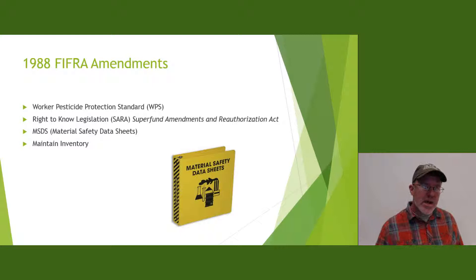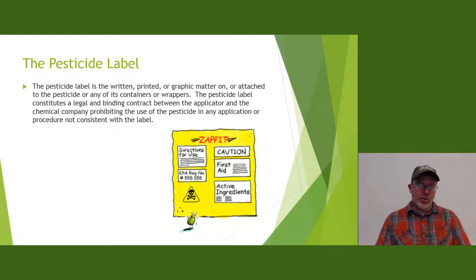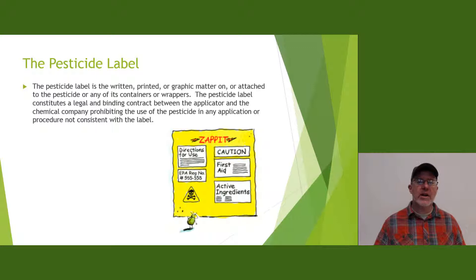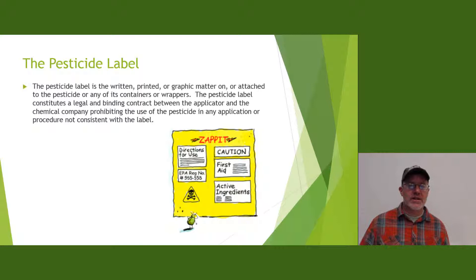In case of a fire, you're supposed to hand that inventory list to the local fire department and let them know what they're dealing with if your shop with chemicals is burning. We go over that more in HOR 164 in the summer. The pesticide label is the written, printed, or graphic matter on or attached to the pesticide or any of its containers or wrappers. The pesticide label constitutes a legal and binding contract between the applicator and the chemical company, prohibiting use of the pesticide in any application not consistent with the label.